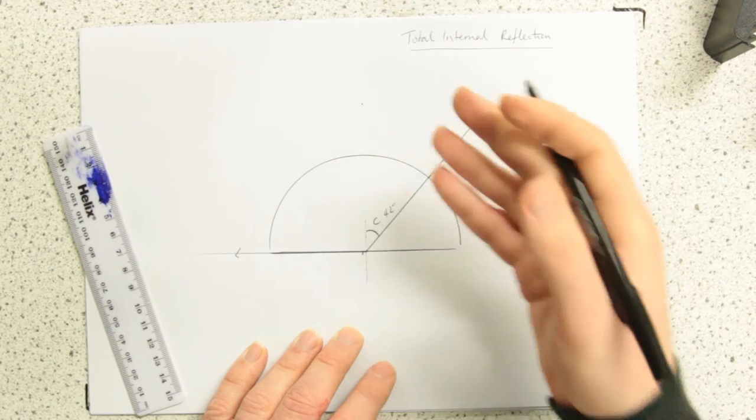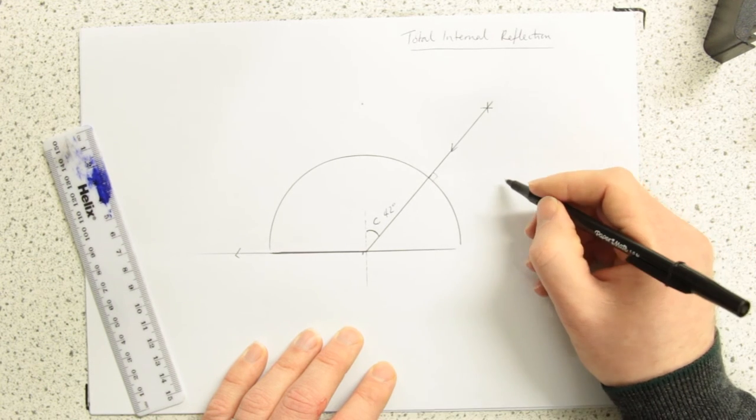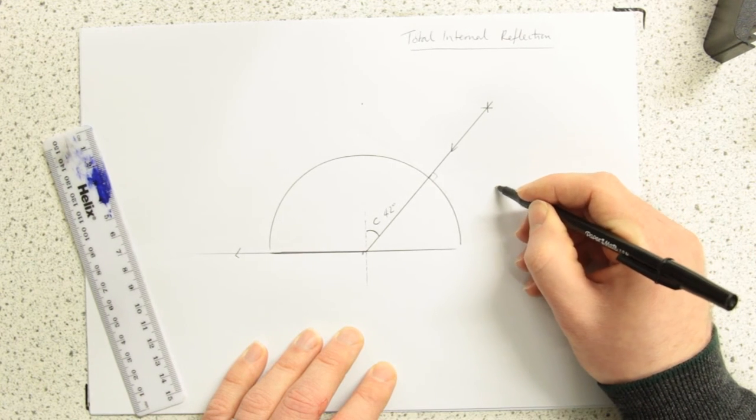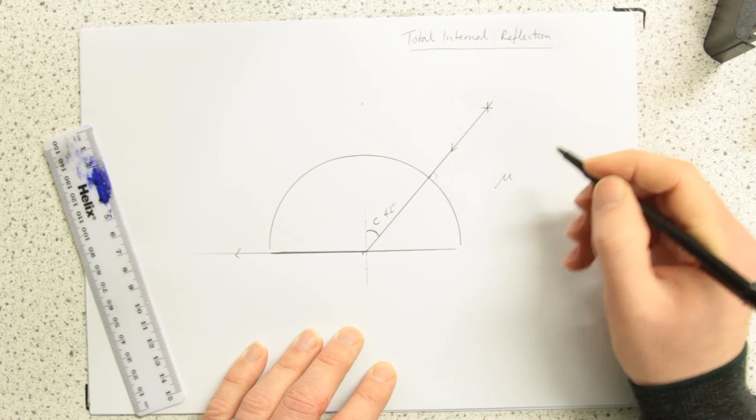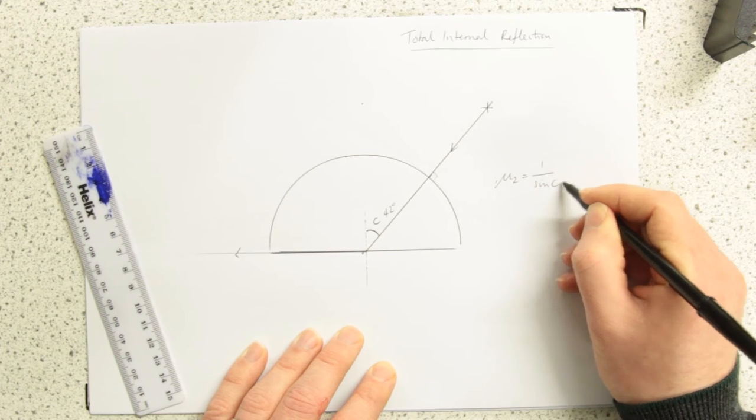A little bit cheating, because I know the book value for critical angle with perspex is 42. But one thing you should also know is that the refractive index from 1 to 2 is 1 over sine of the critical angle.